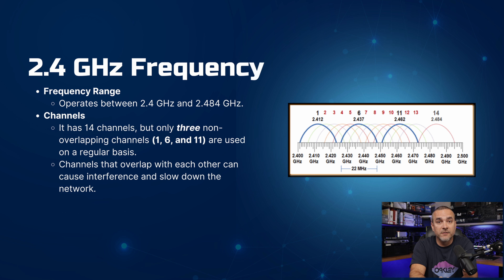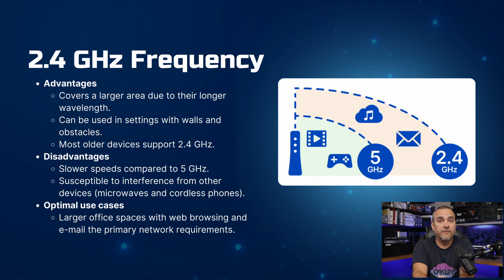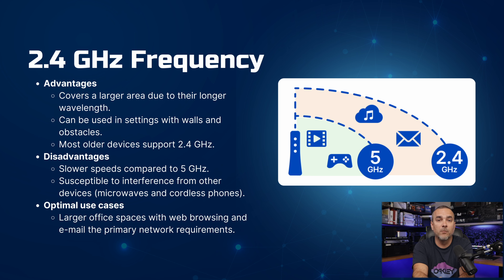Overlapping channels can lead to interference and reduce network speeds. One of the advantages of using 2.4 gigahertz frequency is that it covers a larger area due to its longer wavelength and can be used in settings where there are walls and obstacles. Also, most older devices support this frequency. However, there are some disadvantages, such as slower speeds compared to 5 gigahertz, and it is more susceptible to interference from other devices like microwaves and cordless phones. The optimal use case includes larger office spaces where web browsing and email are the primary network requirements.